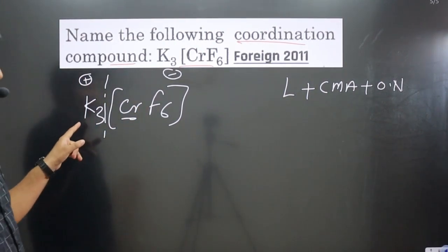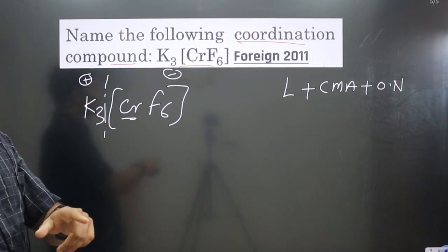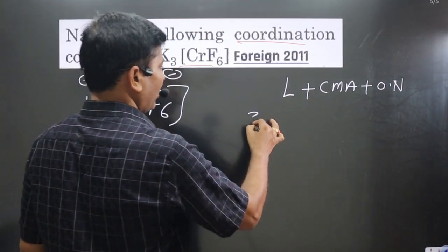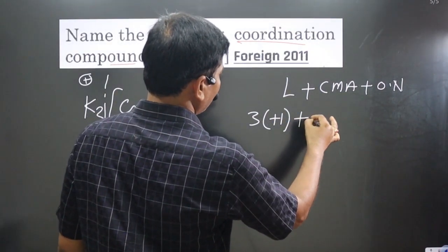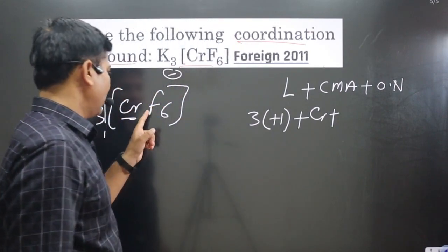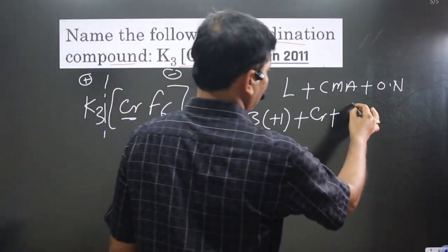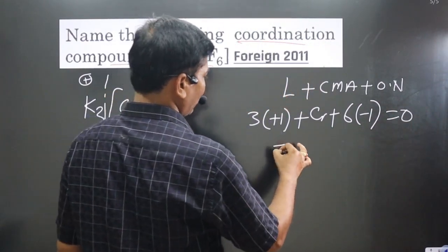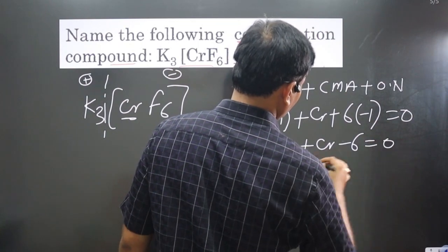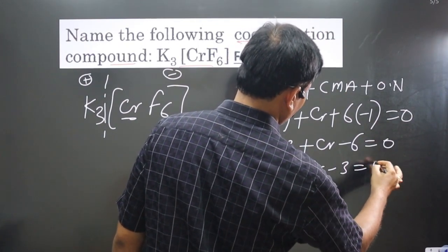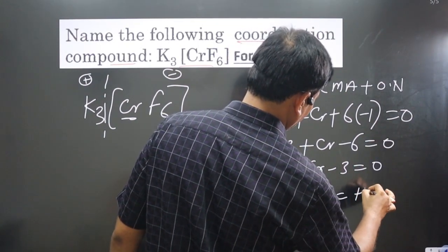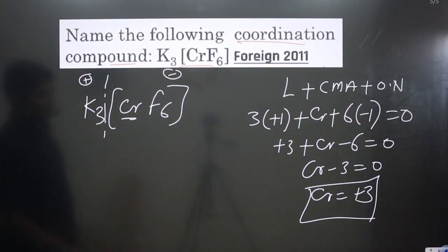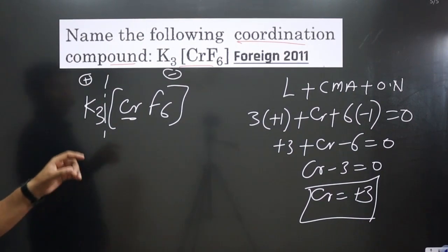Now we calculate the oxidation number. Potassium, a Group 1 element, always shows a +1 oxidation number. We have three potassium ions (+3 total), Cr with unknown oxidation state, and six fluoride ions (F⁻, each −1, so −6 total). The overall complex is neutral: +3 + Cr − 6 = 0, so Cr = +3. Chromium is in the +3 oxidation state.